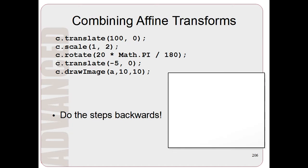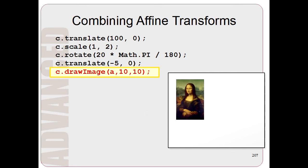Now it's sort of weird, but the way it works is you actually do the steps backwards. So if we go backwards, the first thing we do is we draw the image. So here we draw the Mona Lisa.